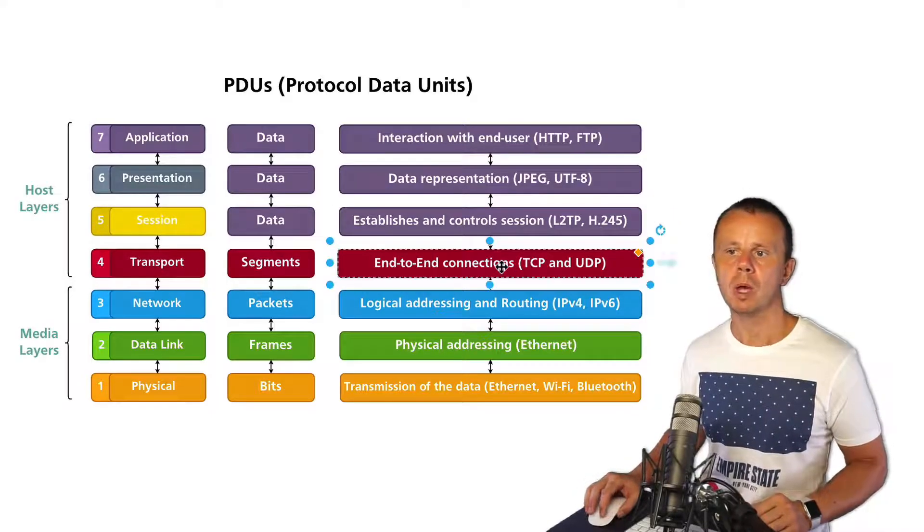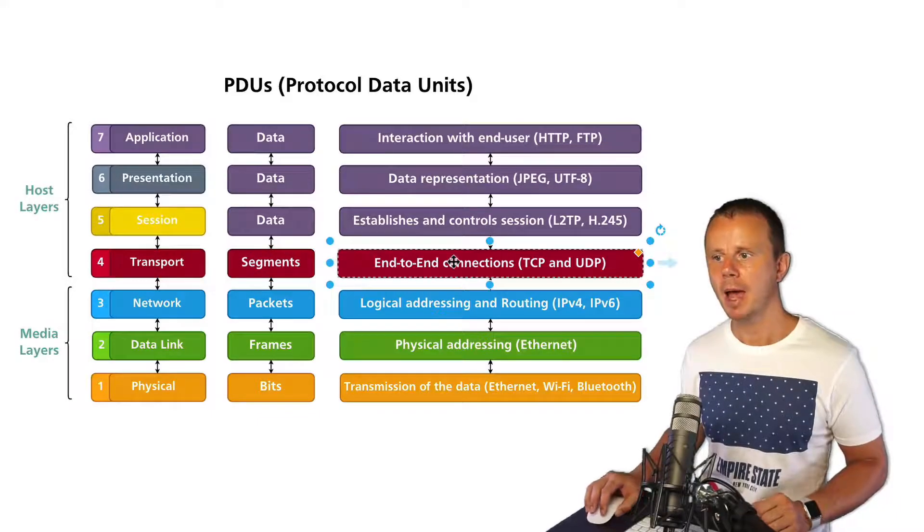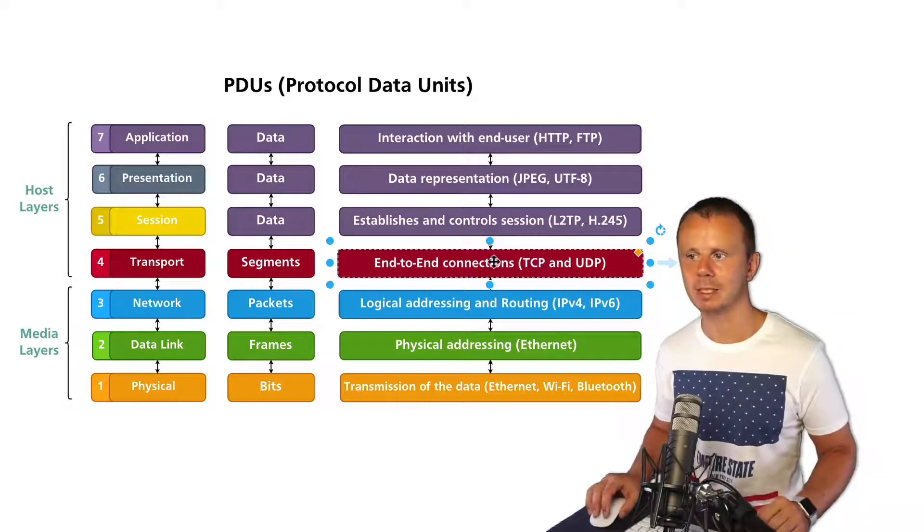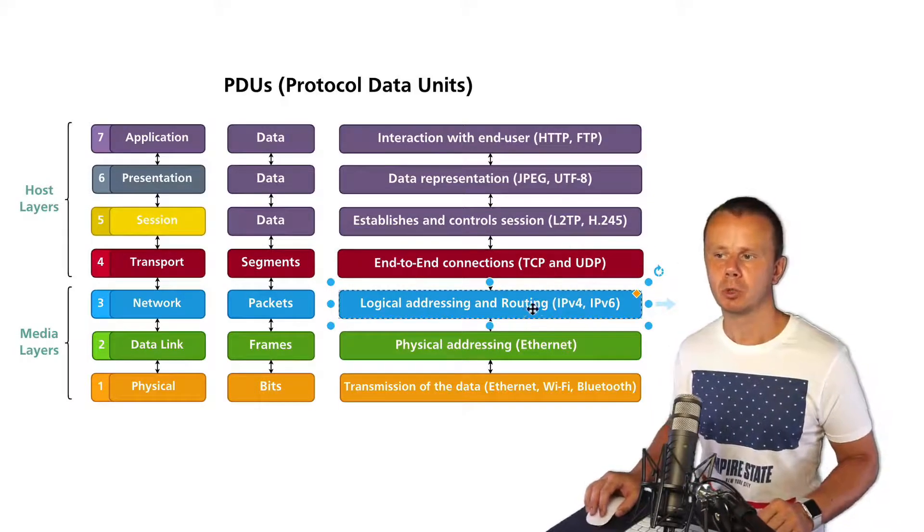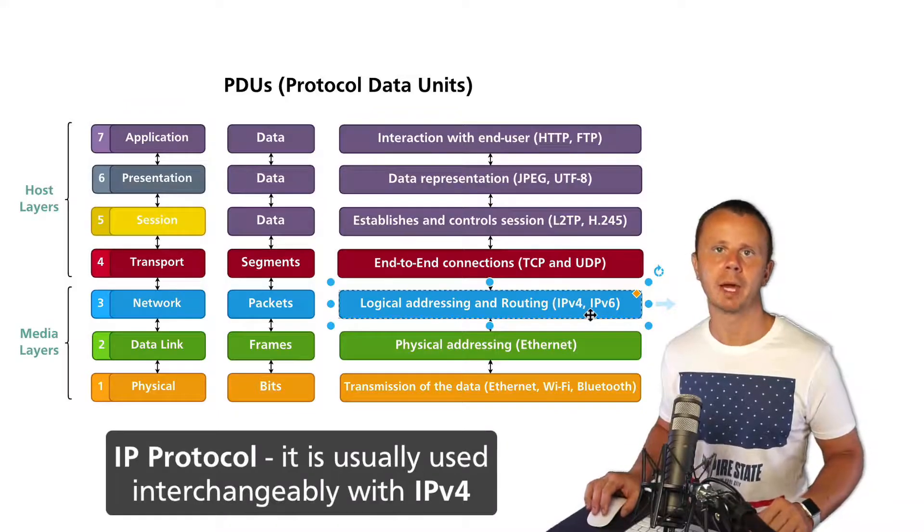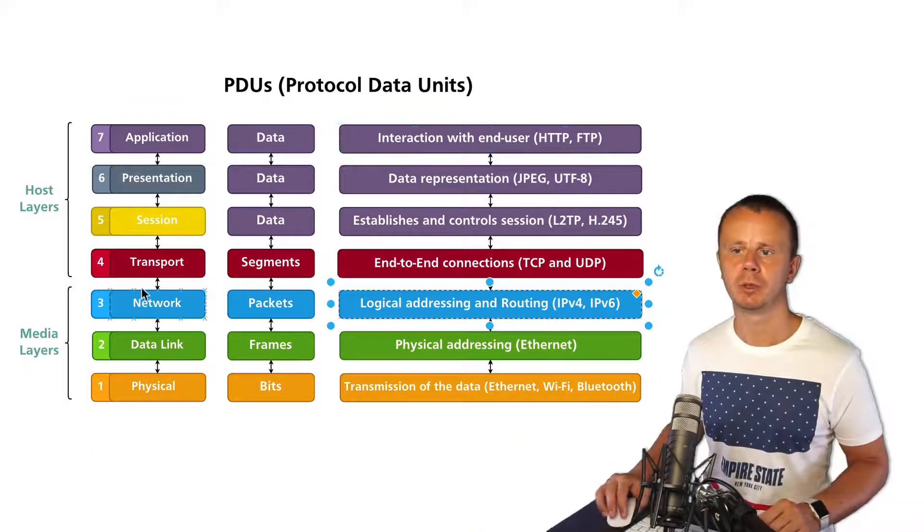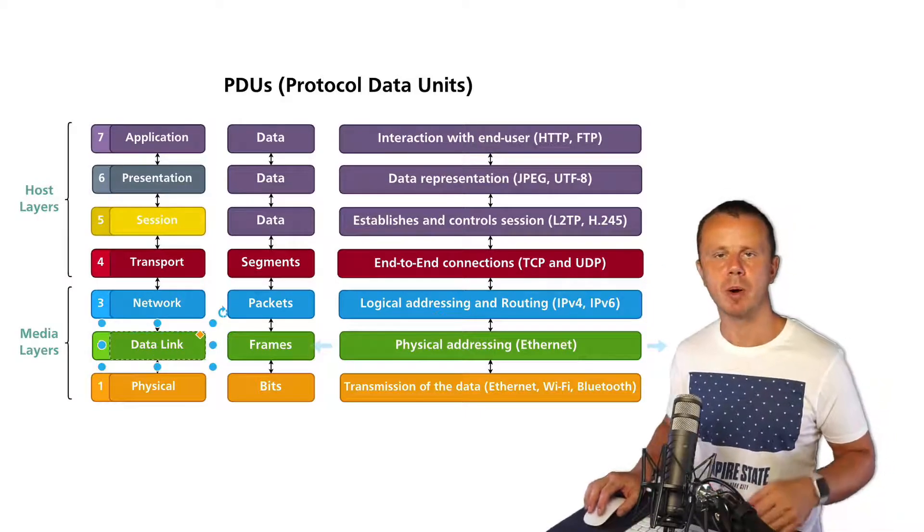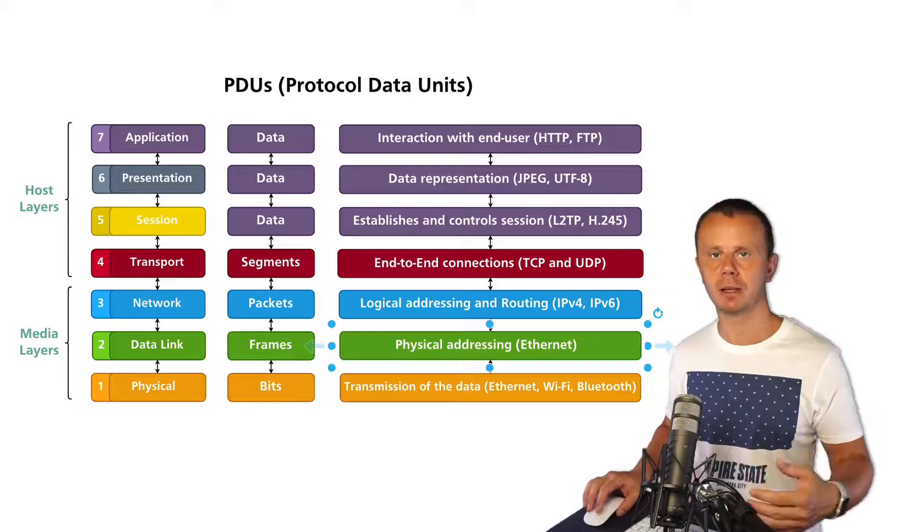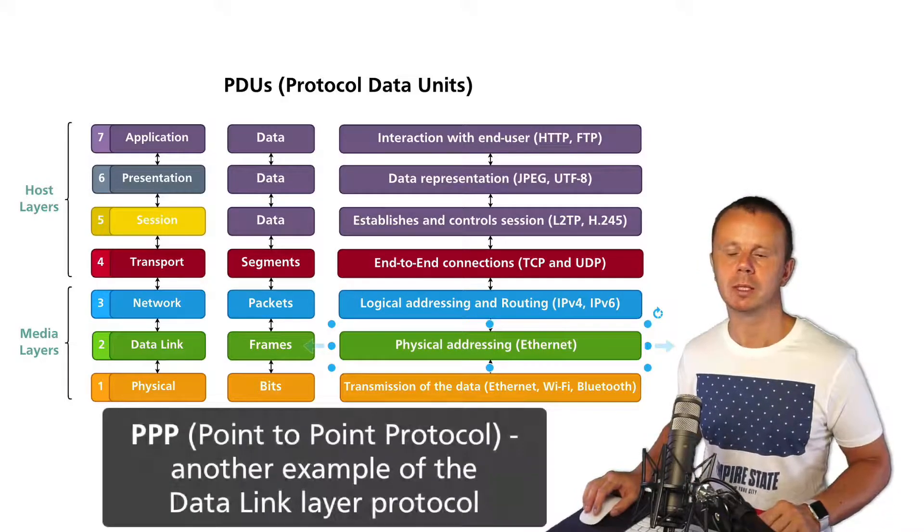On the next transport layer, we work with segments, so segment is the PDU for the transport layer and here we use such protocols as TCP and UDP. On the next layer, network layer, such protocols as IP version 4 and IP version 6 work with packets. Packet is the PDU for network layer. The next data link layer is responsible for preparation of the data for physical layer and physical addressing.